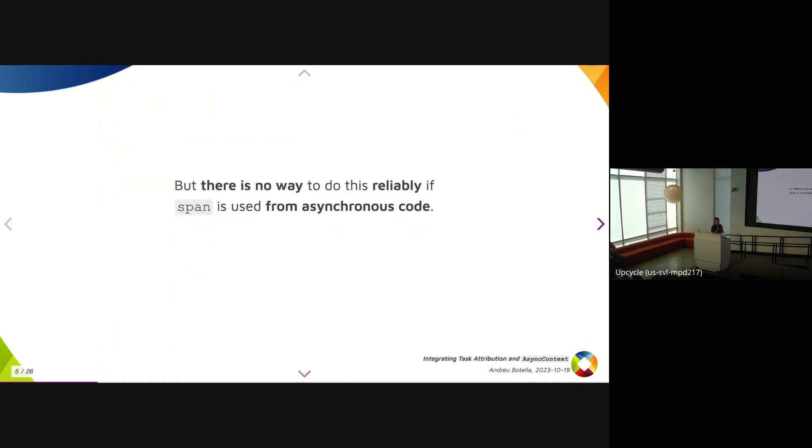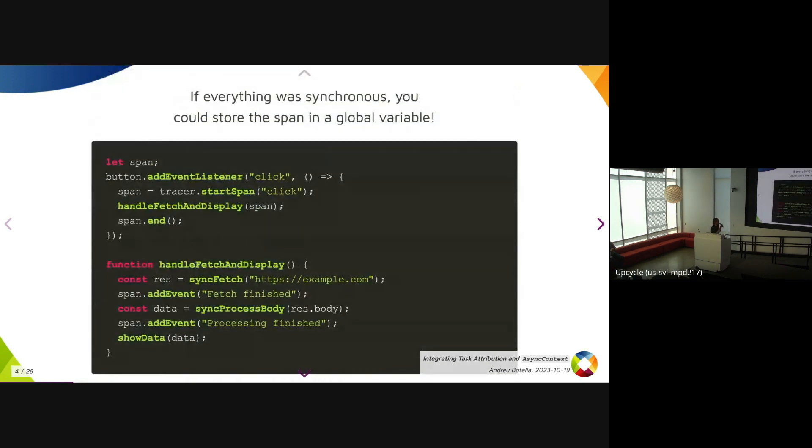This can only happen with synchronous code. There is no way to do it reliably if you use span from asynchronous code, because the async task from the previous click event might actually run after the next click has happened. So if you imagine that this is await fetch and await process body, the fetch could finish after you do the next click, and then span would have the next span value, and you would not be able to associate the information the right way.